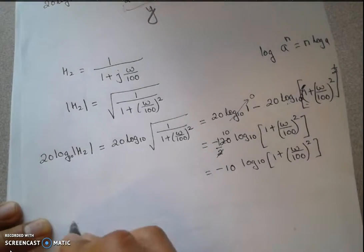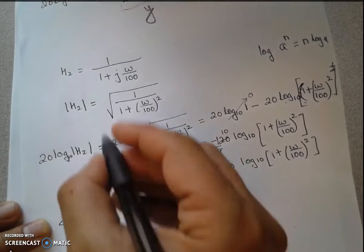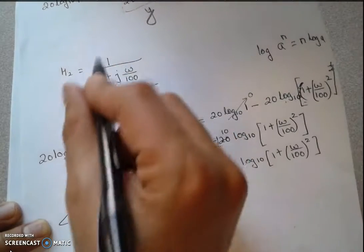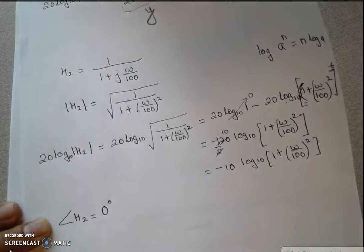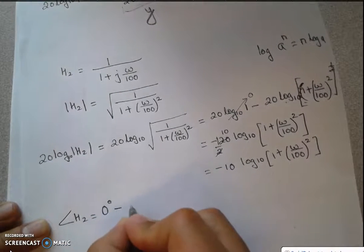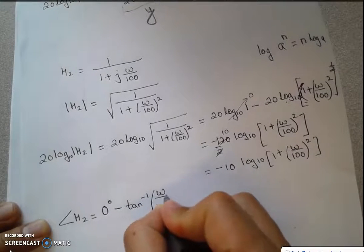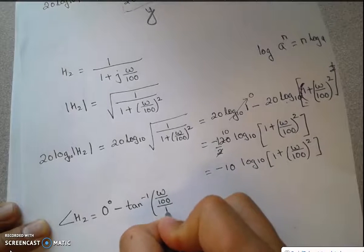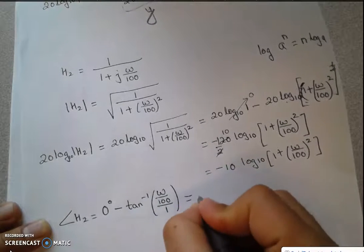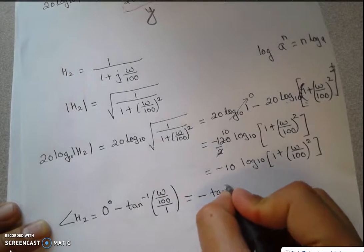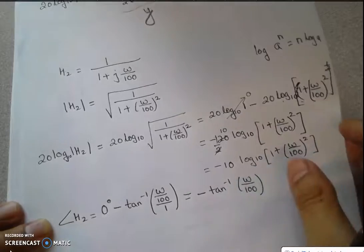For the phase angle of H2, the angle of the numerator (a real number 1) is zero degrees, and the angle of the denominator is arc tangent of omega over 100. Therefore the phase of H2 is simply minus arc tangent of omega over 100.